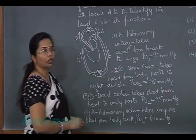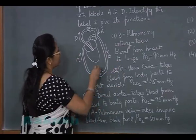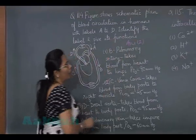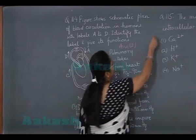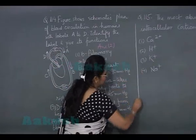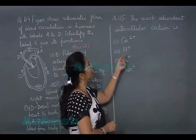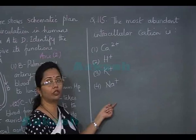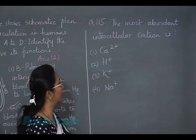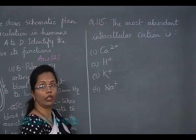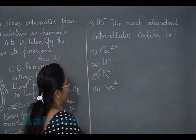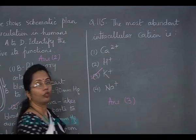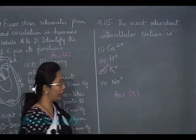Let's move on to question 115. This is a simple question - the most abundant intracellular cation, that means within the cells which cation is most abundant. It is without any doubt potassium ions, so our answer is option 3. Let's move on to the next question 116.